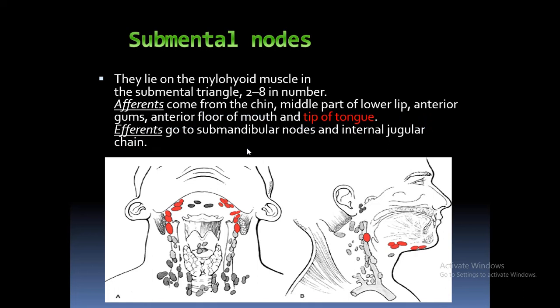First, the submental lymph nodes. They lie on the mylohyoid muscle in the submental triangle. Their afferents come from the chin, middle part of the lower lip, anterior gums, anterior floor of mouth, and tip of tongue. Their efferents go to the submandibular nodes and the internal jugular chain.